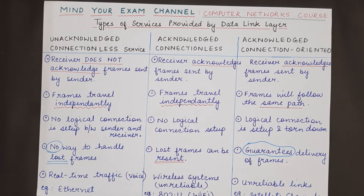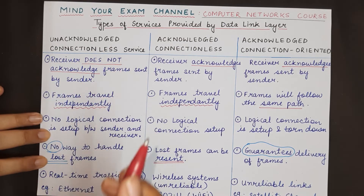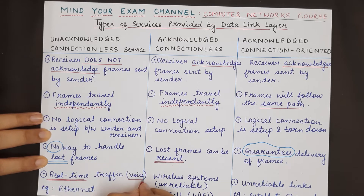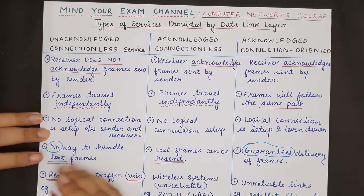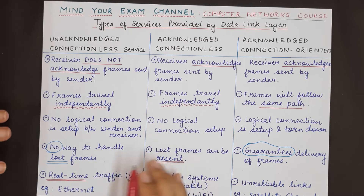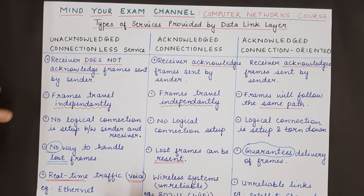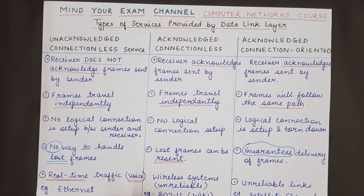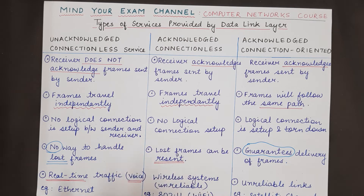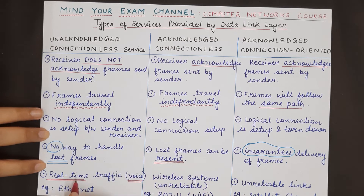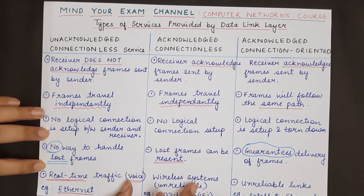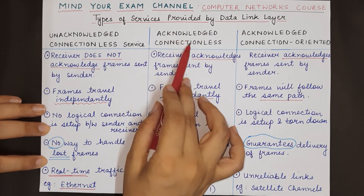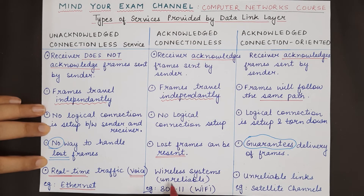Regarding applications: unacknowledged connectionless service is useful for real-time traffic like voice and video transmission, where even if frames are lost you do not need to retransmit them, because late transmission is worse than no transmission. If a voice packet is lost, you would not want it to arrive five seconds later. Ethernet is an important application that uses this kind of service.